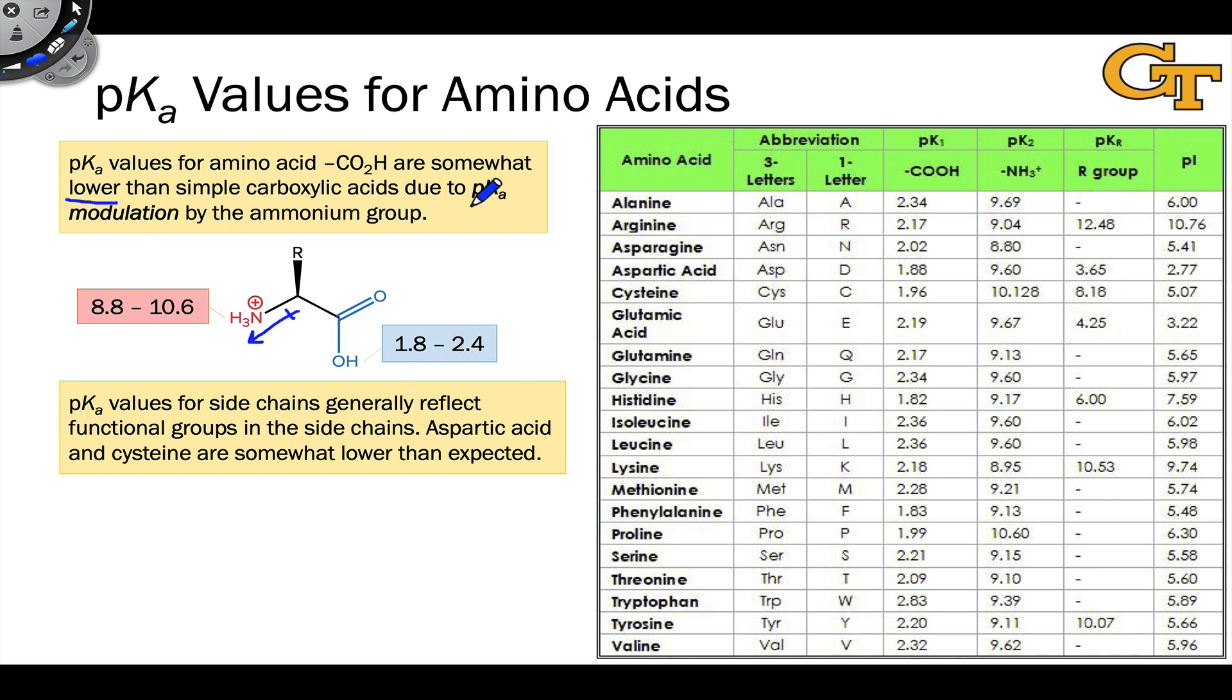One way we could phrase this, and this is a term we'll return to again later, is that the ammonium group is modulating the pKa of the carboxylic acid through an inductive effect. We'll see pKa modulation in an enzyme context a little bit later in the course, but the basic idea is the same when we look at it there. The positive charge in the vicinity of this acidic group causes it to become more acidic, stabilizing negative charge that develops as this proton is lost. Similar pKa modulation effects are observed in certain acidic side chains.